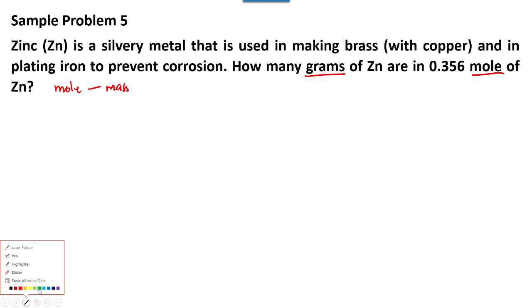So the given mole of zinc times the molar mass of zinc. Okay, so the molar mass of zinc is 65.38 grams, so we just multiply it to the given mole.